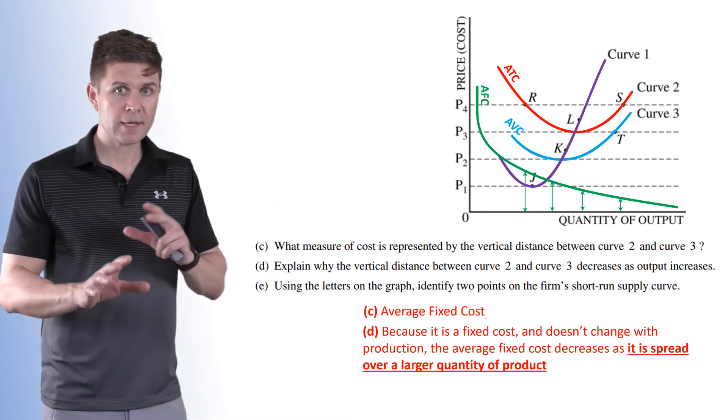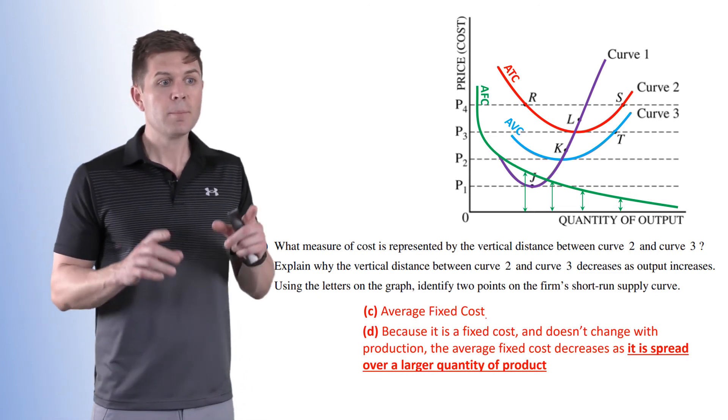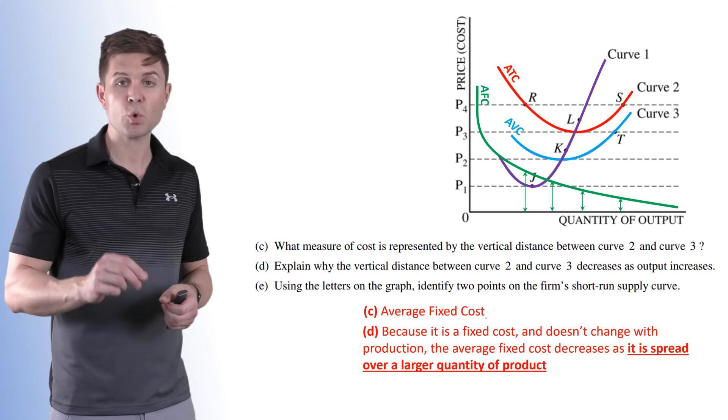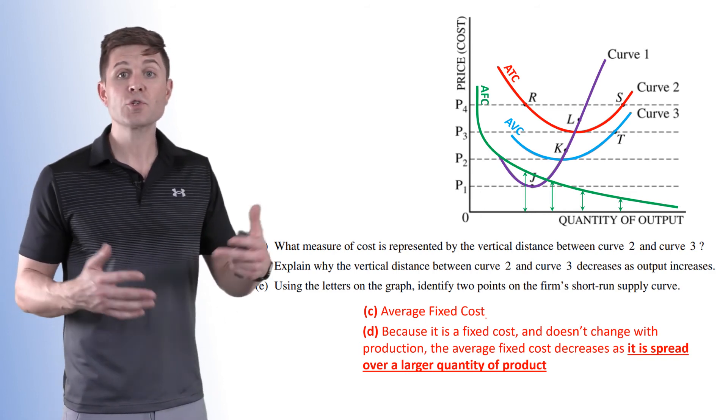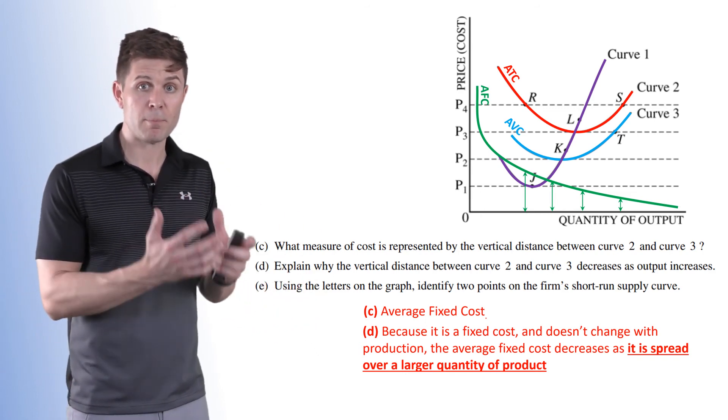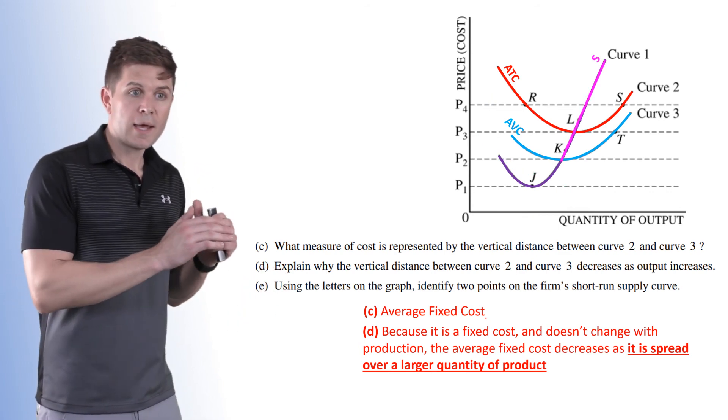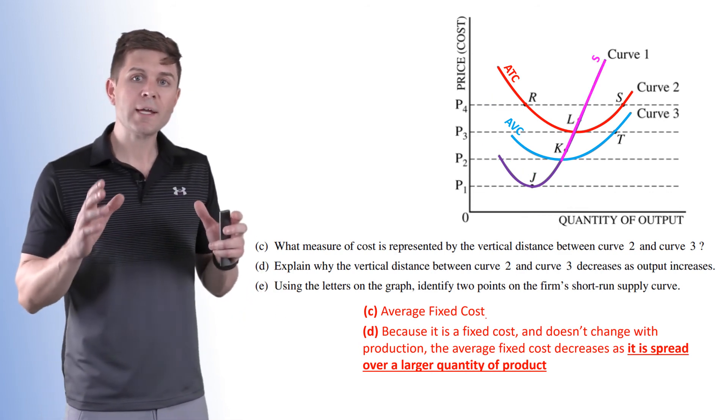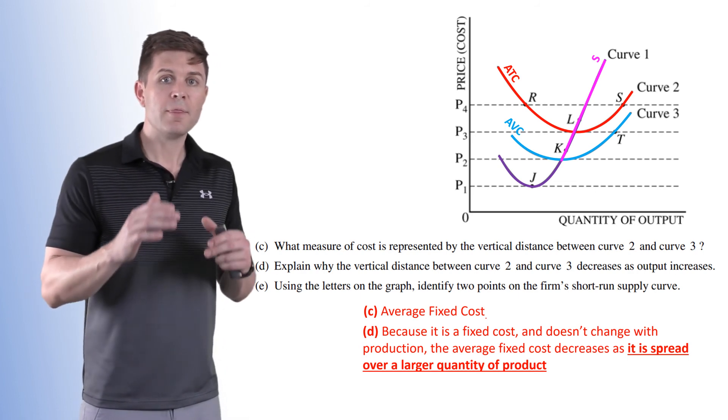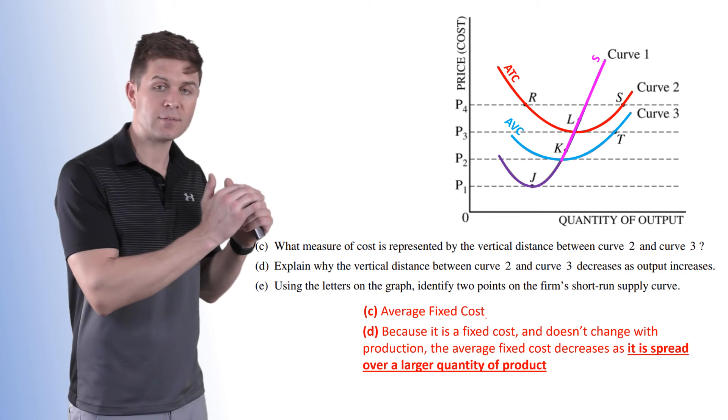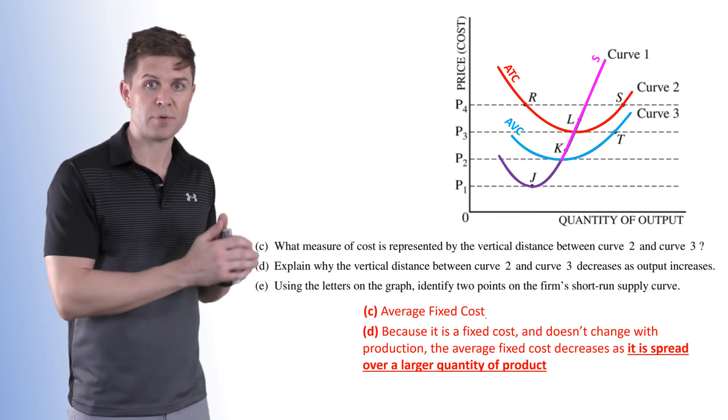Now part E kicks us into a different area here, but it says, using the letters on the graph, identify two points on the firm's short run supply curve. The short run supply curve comes from the marginal cost curve, or curve one here. When we look at it, we know that in the short run,